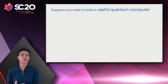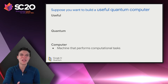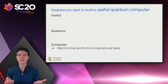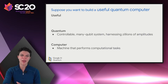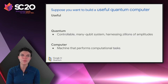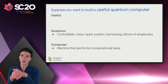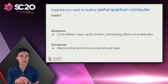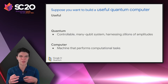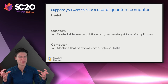Suppose you want to build a useful quantum computer — where do you start? Let's work backwards. A useful quantum computer is a machine that performs computational tasks. If it should be quantum, it will need to be a controllable quantum system with many qubits — many individual controllable quantum objects whose interactions with each other should also be controllable. That means we will need to harness the complex amplitude values that describe the amount of amplitude in each possible measurement configuration for that set of qubits.